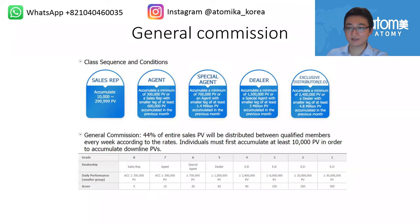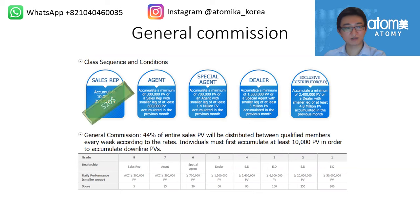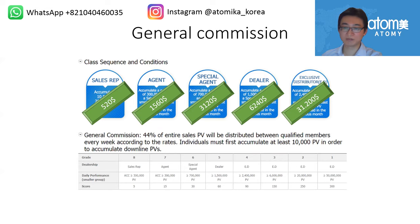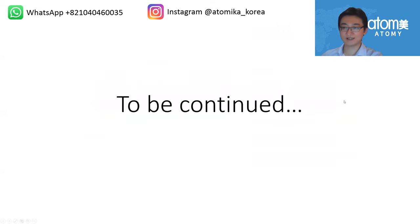Looking at the income screen, there are five levels of distribution in Atomy: sales representative, agent, special agent, dealer, and exclusive distributor. A sales rep can earn around $220–$500 per month via binary steps. An agent can earn $1,560, a special agent $3,120, a dealer around $6,240, and an exclusive distributor approximately $31,200. These are approximate figures. Binary steps are one of the main income sources — other sources will be covered in the next video.